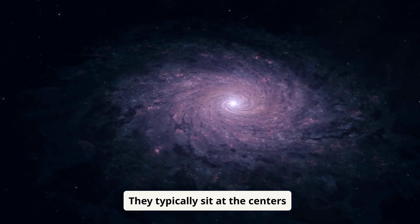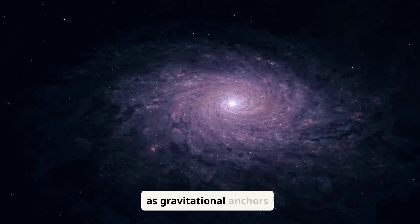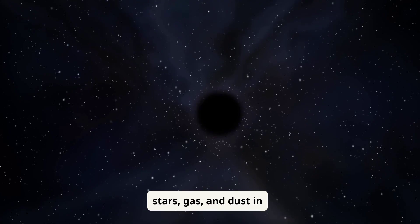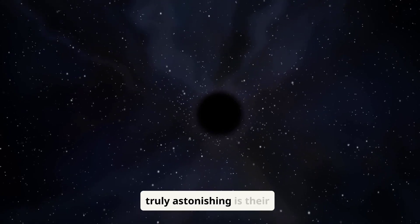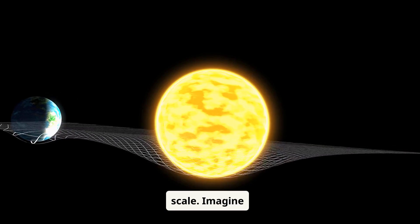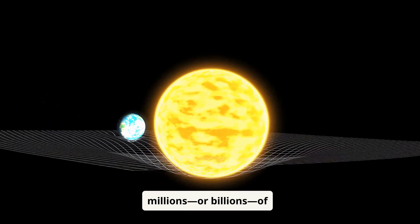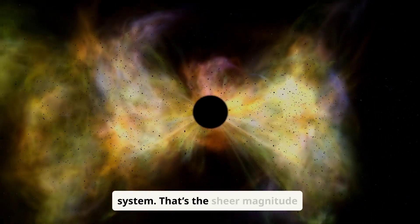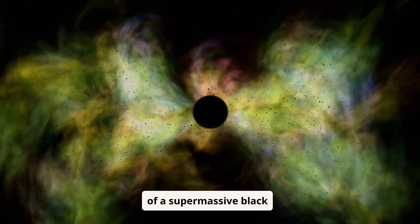They typically sit at the centers of galaxies, acting as gravitational anchors that keep billions of stars, gas, and dust in orbit. What makes them truly astonishing is their scale. Imagine compressing the mass of millions or billions of suns into a size smaller than our solar system. That's the sheer magnitude of a supermassive black hole.